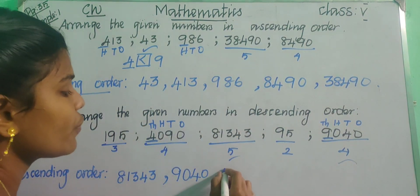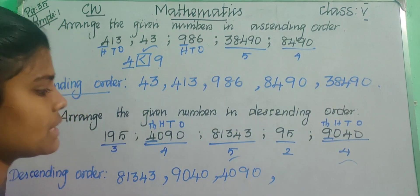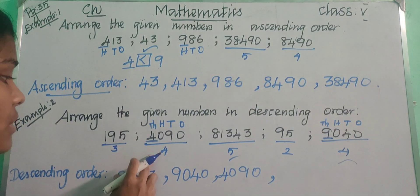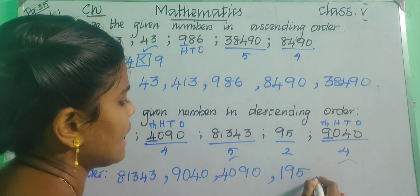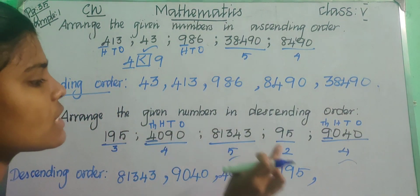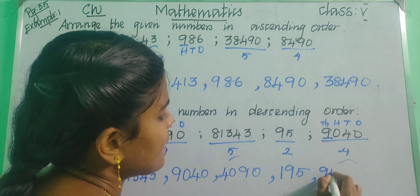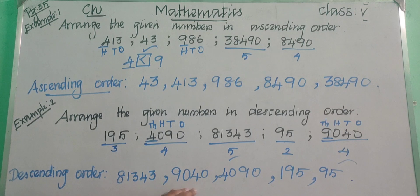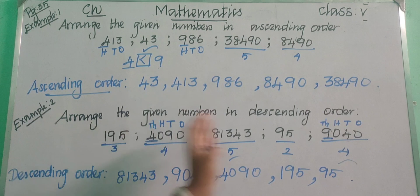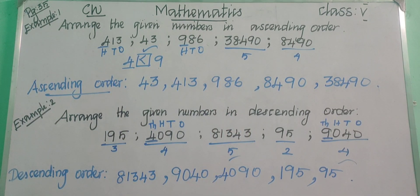After the 4-digit numbers, we write the 3-digit number: 195. And at the last, we write the 2-digit number 95, which is the smallest number in this group. So the descending order is: 81,343, then 9,040, then 4,090, then 195, and at the last 95. We have arranged this in descending order.